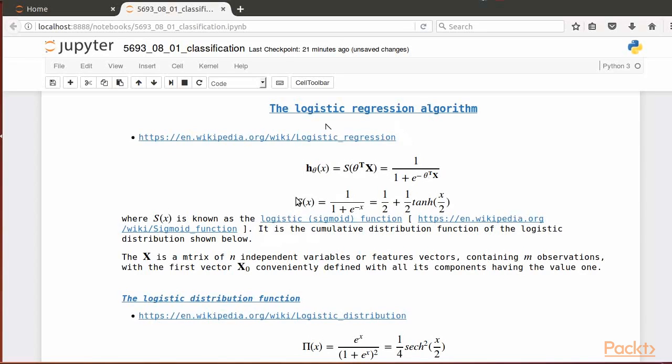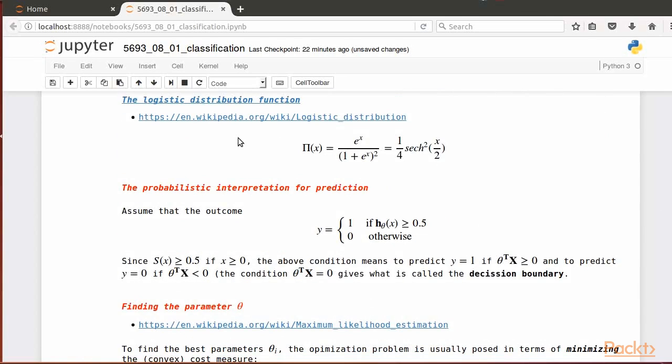S of x is the logistic sigmoid function, which you can read about on this web link. It represents the probability that the quantity represented by x, y equals 1. The logistic sigmoid function is interpreted as the probability.